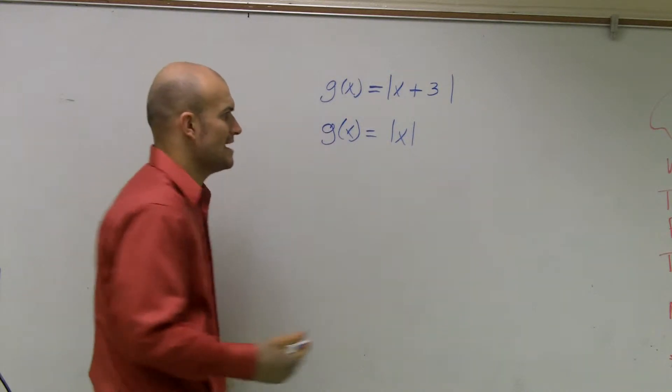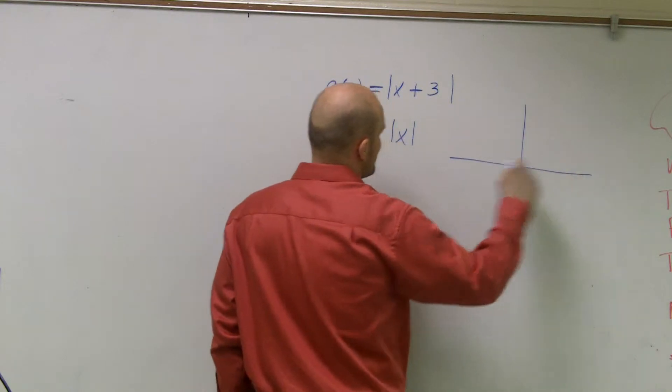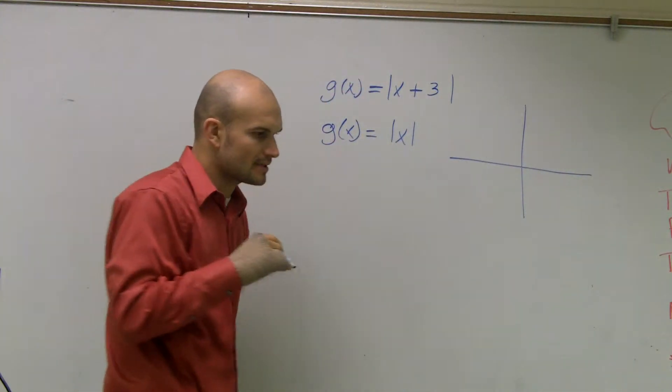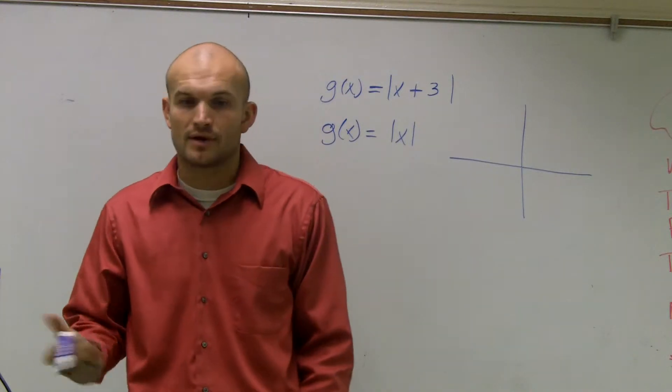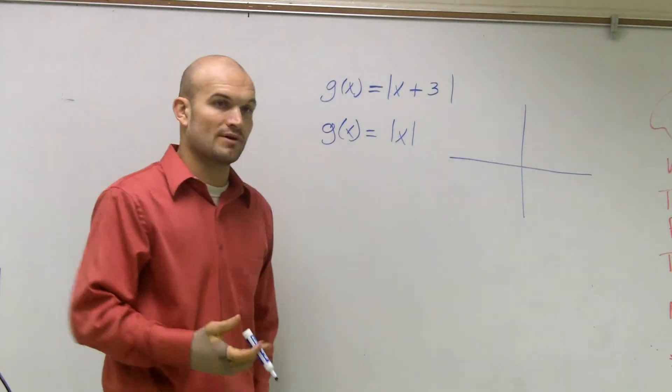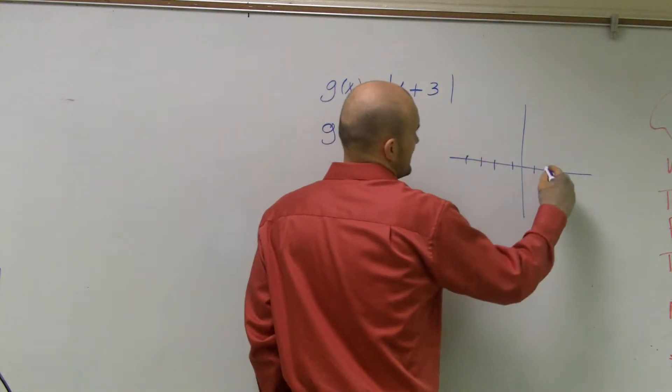If we were to set up an x and y table, what we'd notice is whenever I plug in negative 4, the absolute value of negative 4 is positive 4, and the absolute value of positive 4 is still going to give you 4. So what our graph ends up looking like is what we call a V.